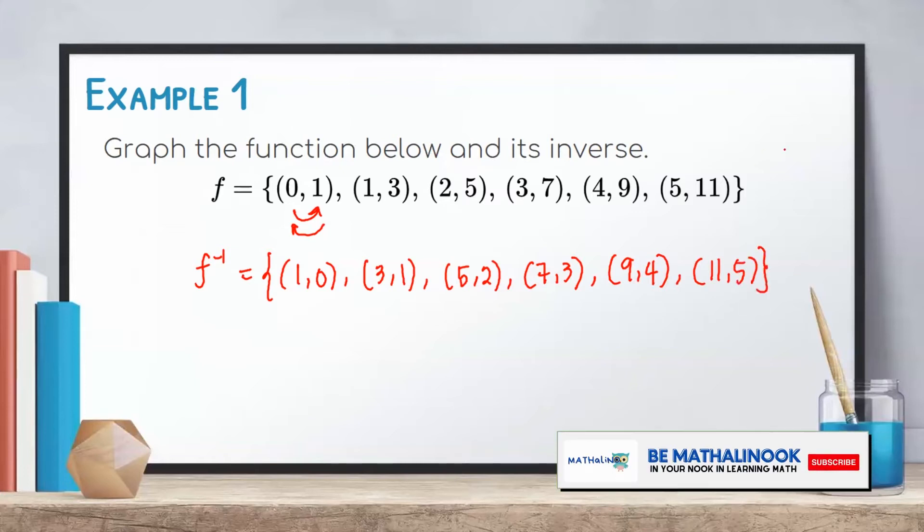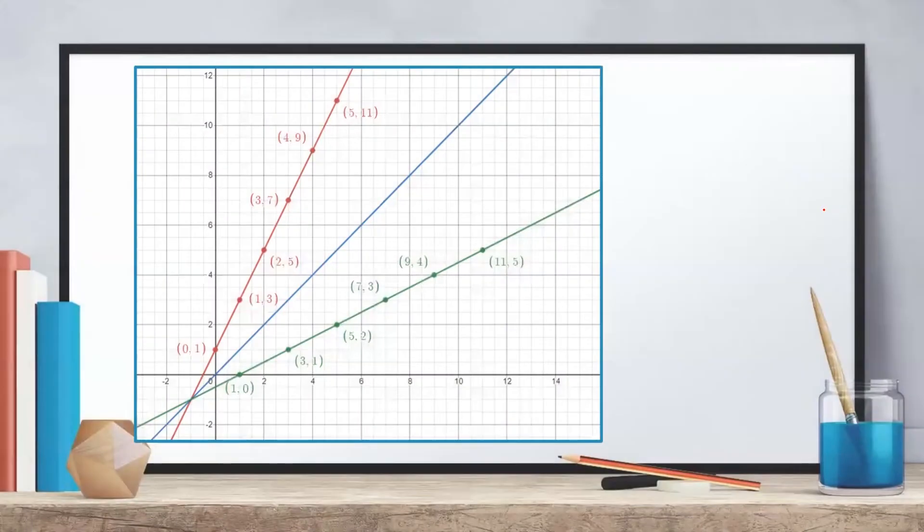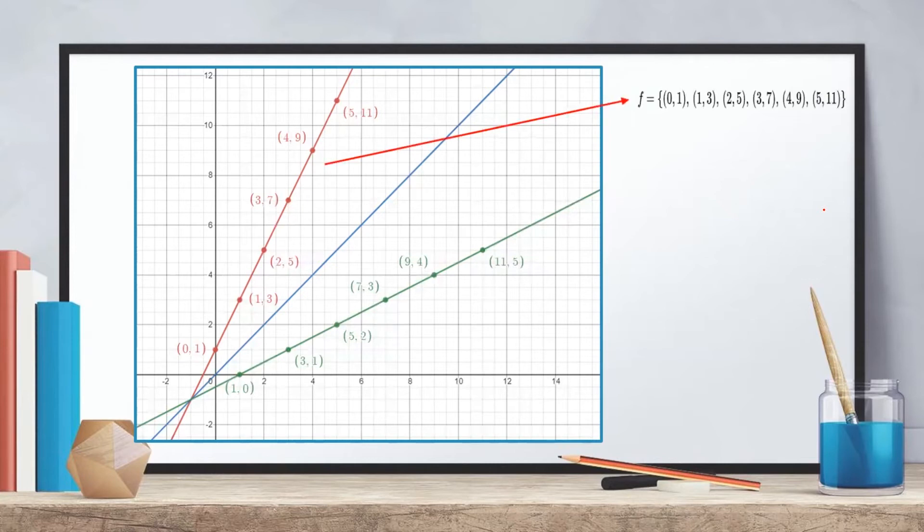To graph the function and its inverse, we will plot the ordered pairs in a Cartesian plane and connect all the points. This is the graph of the original function with ordered pairs (0, 1), (1, 3), (2, 5), (3, 7), (4, 9), and (5, 11).